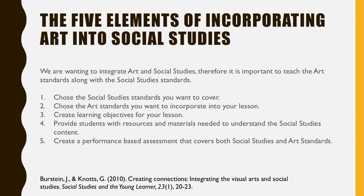So the five elements of incorporating art into social studies. First, you want to choose the standards you want to cover and what you want the students to know. Then you want to select your art standards — you don't want to just say 'we're going to paint today in social studies.' You want to be very specific about the art standards you are using so students know the purpose of the lesson. Then you want to create objectives, provide students with resources and materials they need to understand the social studies content, and create an assessment that covers both the social studies and the art standards. Since we are incorporating art into social studies, you want the art portion to have some weight in the assessment.